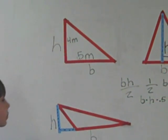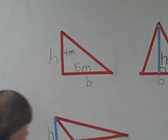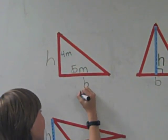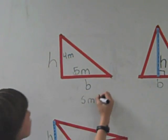Now an example problem. The base of this triangle is 5 meters, and the height is 4 meters.